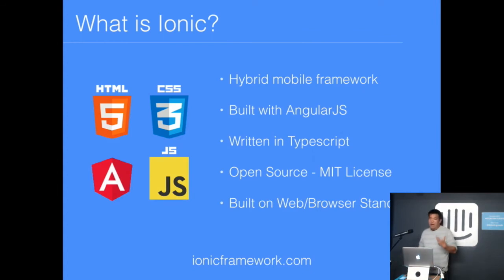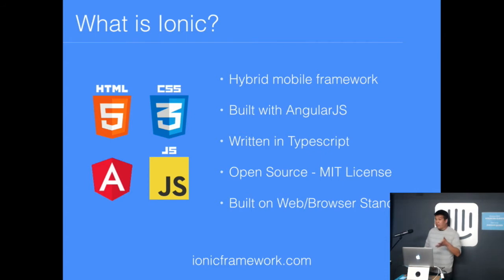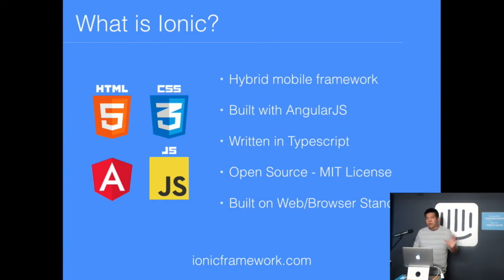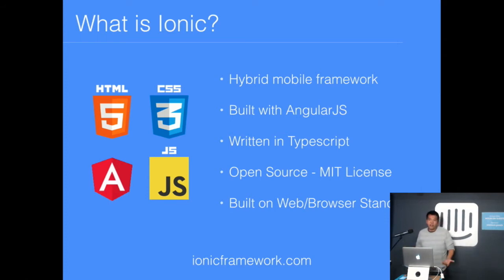For anyone who isn't familiar, Ionic is a hybrid mobile framework built with AngularJS and TypeScript. Ionic 1 is built on Angular 1, and Ionic 2 — the new framework — is built on Angular 2. You build your Ionic apps with Angular 2 and TypeScript. It's 100% open source under the MIT license, always has been and always will be. You can use it to learn Angular, for prototyping apps, building internal or external apps — whatever. It's built 100% on web and browser standards, which means you can take your existing skills and very quickly repurpose them into mobile app development.